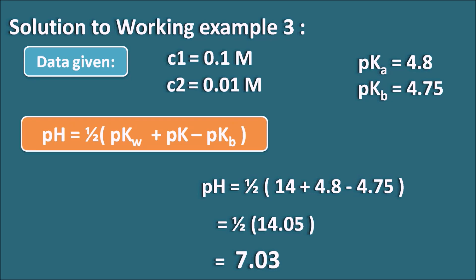In summary, we can calculate the pH of a salt solution made up of weak acid and strong base, strong acid and weak base, or both weak acid and weak base using different formulas. For a salt of weak acid and strong base: pH = ½(pK_w + pK_a + log c). For a salt of strong acid and weak base: pH = ½(pK_w − pK_b − log c). For a salt of weak acid and weak base: pH = ½(pK_w + pK_a − pK_b).